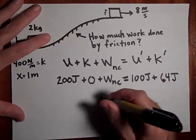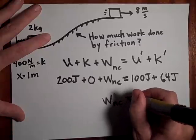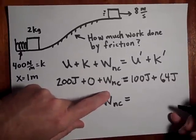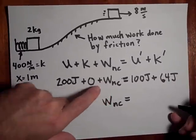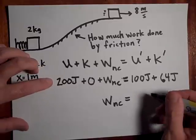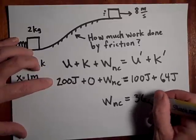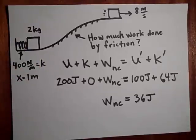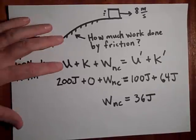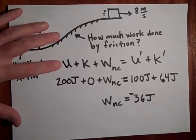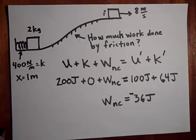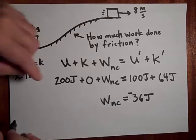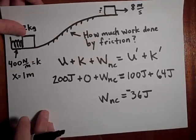Okay, well now I know that the work done by friction - friction took some of the mechanical energy away from this system. How much mechanical energy was taken away from this system? It looks like 36 joules. 36 joules of energy was taken away from the system, so this is negative 36. Yeah, 200 joules plus negative 36 gives me 164 joules.